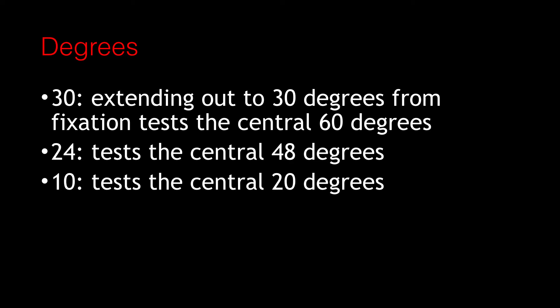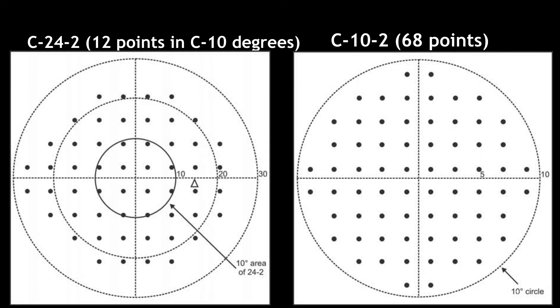In 30 degrees, we are checking the central 60 degrees because it extends out 30 degrees from fixation. In 24-2, we are checking the central 48 degrees, and in 10-2, we are checking the central 20 degrees.